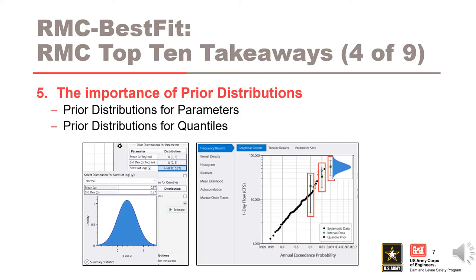Number five is the importance and significant influence of prior distributions for flow frequency analysis using RMC Best Fit. Prior information in the form of prior distributions for parameters, such as regional skew, and prior distributions for quantiles, such as rainfall runoff modeling using precipitation frequency, have a significant influence on the flow frequency analysis.